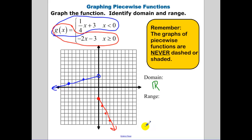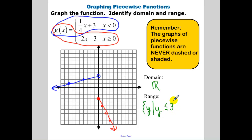The range is a little more complicated. The bottom function starts at negative 3 and goes down forever, covering all y values less than negative 3. The blue function goes from negative infinity up to positive 3 and stops there. Since we've covered everything less than 3, the range is y such that y is less than or equal to 3.